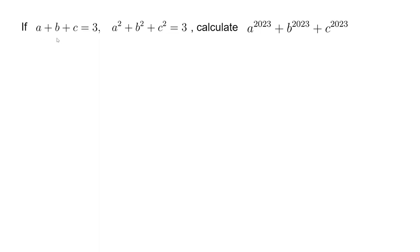If we have a plus b plus c equals 3, and a squared plus b squared plus c squared equals 3, we want to calculate this expression: a to the 2023 plus b to the 2023 plus c to the 2023.